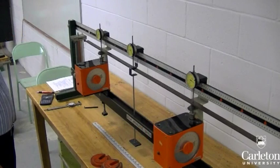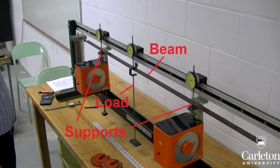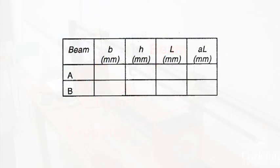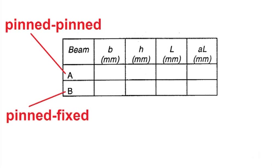We will be applying a variable point load onto this beam at a specific distance from one end, and recording the reaction at the two ends at which the beam will be supported. The support conditions tested will be Pinned-Pinned for beam A or Pinned-Fixed for beam B.